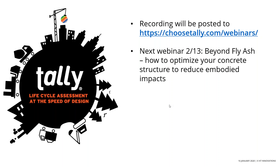There's a question about why Tally is capable of comparing across different product categories. You do want to make sure you're comparing something that serves the same functional purpose from an LCA perspective, but Tally does allow you to compare across things that come from different product category rules. The flooring example — carpet versus polished concrete — would have very different product category rules, but by virtue of Tally having a single database produced by a single software entity using the same assumptions, those comparisons are valid. Similarly, a wood versus steel structure: comparing EPDs could be wildly divergent, but they wouldn't be in the context of Tally.